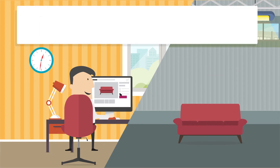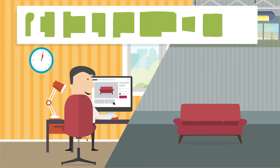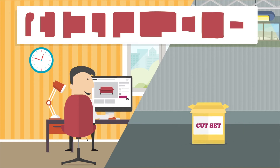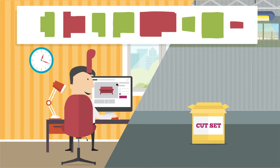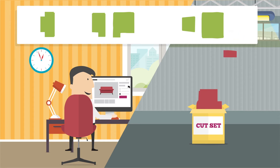For each answer, the designer will define an associated list of actions to be triggered, such as adding or removing parts or changing the fabric type or quantity for other parts. By obtaining the customer's answer to each question, the initial stock of parts existing in the model is filtered and only the needed parts are included in the set to be cut.